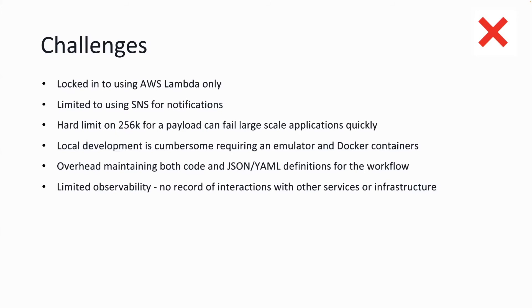If you want to alert downstream subscribers and combine choreography with orchestration patterns, you need to do it through SNS only. There's also a hard limit of 156 kilobytes for a payload — if users submit a larger payload, you'll need to re-architect, which can lead to costs and downtime. Local development with Step Functions is a bit cumbersome — you need to run an emulator and Docker containers. And maintaining JSON/YAML definitions in sync with your many Lambda functions is overhead that just grows.